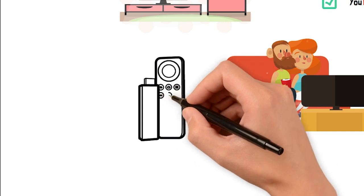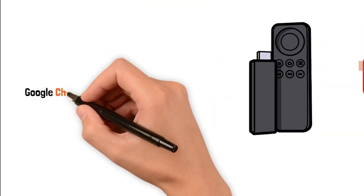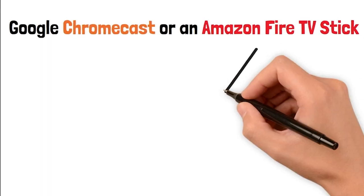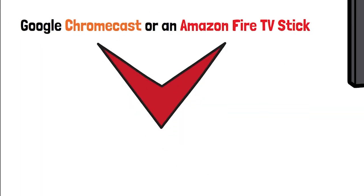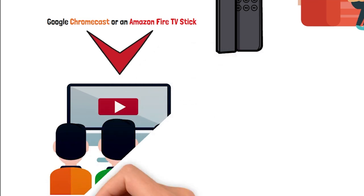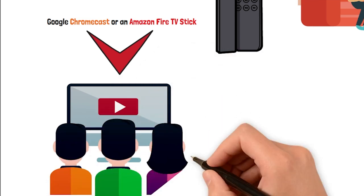Now, if you want to take things up a notch, suggest investing in a streaming device like a Google Chromecast or an Amazon Fire TV stick. These gadgets allow guests to cast their own content from their smartphones or tablets directly to the TV. It's like having a personal entertainment center right at their fingertips.